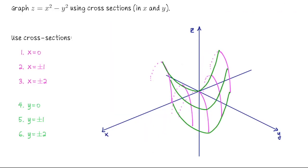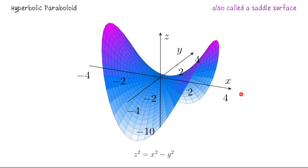Piecing it all together gives what we call a hyperbolic paraboloid. Note the x-axis orientation is rotated to satisfy the right-hand rule. The hyperbolic paraboloid is sometimes called a saddle surface because of the way it bends up in one direction and down in the other — like the pommel of a saddle. This shape is also like a Pringles chip: it goes up in one direction and down in the other. It's a real-life application of the hyperbolic paraboloid, and another example of a quadric surface.